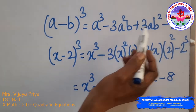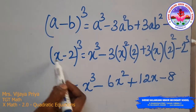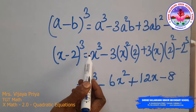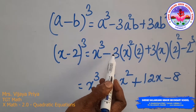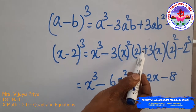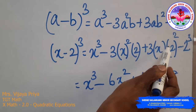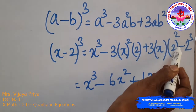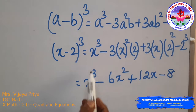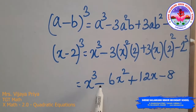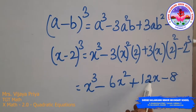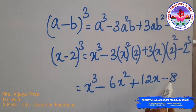Expanding (x − 2)³: x³ − 3x²(2) + 3x(4) − 8, which gives x³ − 6x² + 12x − 8.